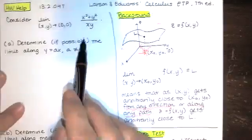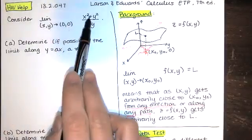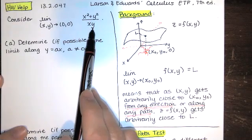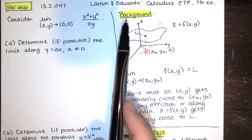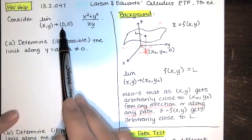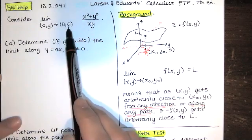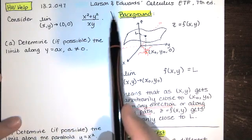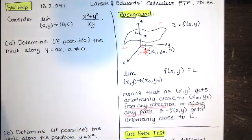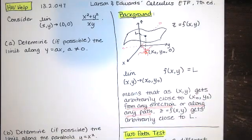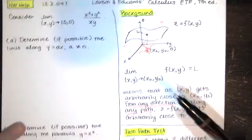We're given this limit as (x, y) approaches (0, 0) of this function. What happens to the z values? If z = (x² + y²) / (xy), as (x, y) approaches (0, 0), what happens to z? One thing we typically do is plug in 0 and 0, but if x = 0 and y = 0, we get (0² + 0²) / (0 × 0) = 0/0 — an indeterminate form. So the limit might exist or might not, but the way this problem is set up, chances are the limit does not exist.